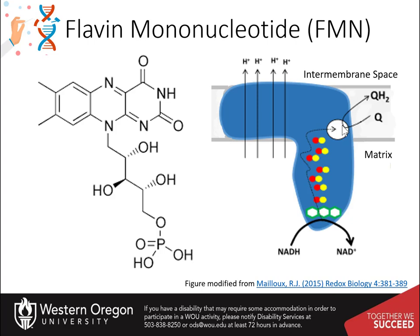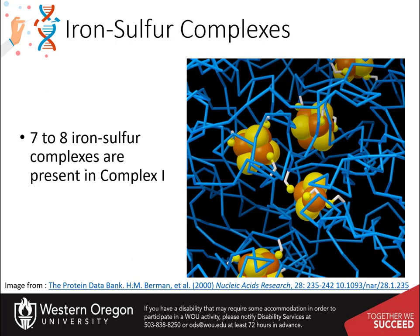Transfer of the electrons requires additional cofactors to pass the electrons through the protein to the correct location. Flavin mononucleotide is related to FAD and can also serve as a prosthetic group that is able to transfer electrons and protons within a protein. Within complex I, it is the first electron acceptor, mediating the oxidation of NADH to NAD+. Iron-sulfur clusters are also perfect for the task of transporting electrons and protons, since they form a unique delocalized system for storing electrons. Two types of clusters are particularly common: a square arrangement of two irons and two sulfurs, and a distorted cube composed of four irons and four sulfurs. Both are seen in complex I protein, shown here.